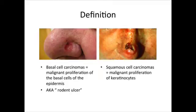Basal cell carcinomas, also known as rodent ulcers, are defined as malignant proliferation of the basal cells of the epidermis, while squamous cell carcinomas are malignant proliferation of keratinocytes.